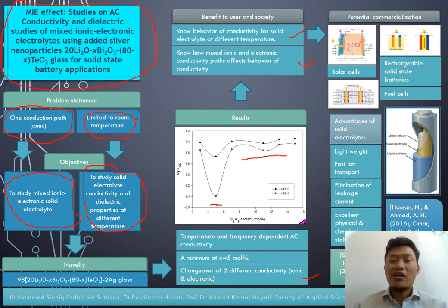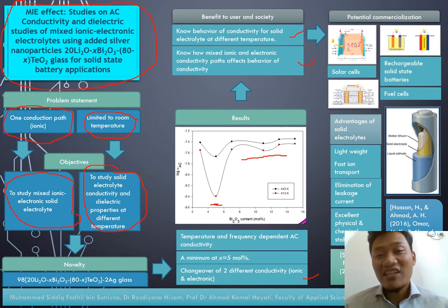The potential commercialization that we can apply is solar cell - how they can make electricity based on the solar. This mixed ionic electronic solid electrolyte glass can be applied to solar cell. Fuel cell - how they can make electricity by using hydrogen - they need the solid electrolyte as the transference of charge. The last will be rechargeable solid state batteries. This is our main concern here.